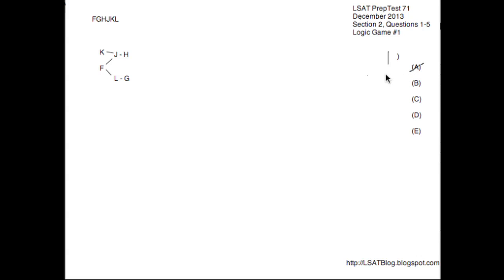Looking at B, G is third. Could that happen? Well yeah, we could have F on one, L on two, G on three, then have K, J, H coming after that. So B is gone as well. Looking at C, H on four, could that happen? Yeah, no reason it couldn't. We could have F and K on one and two, J on three, H on four, then have L and G come after. So C is a possibility as well, so that's gone.